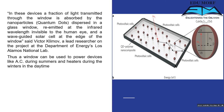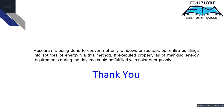The light is then re-emitted at the infrared wavelength, invisible to the human eye, and guided to a solar cell at the edge of the window. This was coined by Viktor Klimov, a lead researcher at the Department of Energy's Los Alamos National Lab. Using this process, a simple window can be used to power devices like air conditioning during summers and heaters during winters in the daytime.